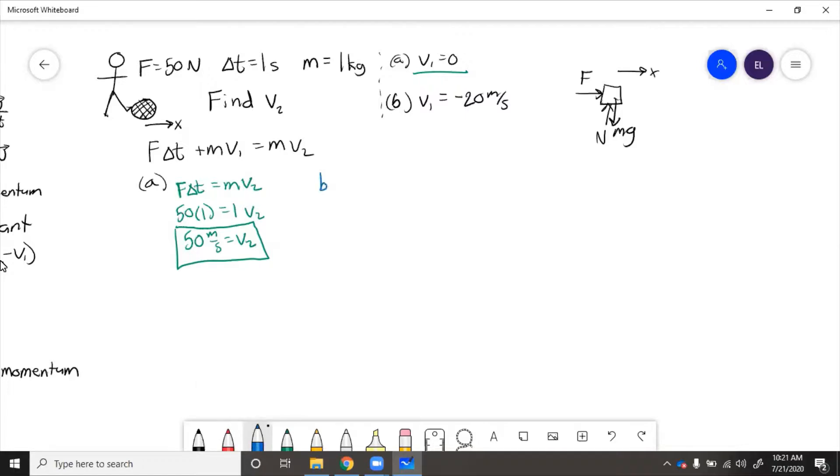Now for b, the ball starts out moving towards him, so we have F Δt plus m v1 equals m v2. So 50 times 1 plus 1 times negative 20 equals 1 v2, giving us 30 meters per second equals v2.